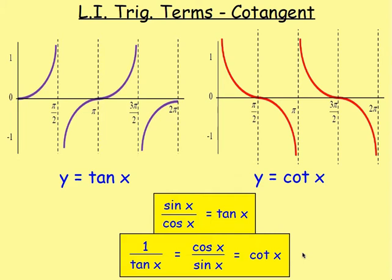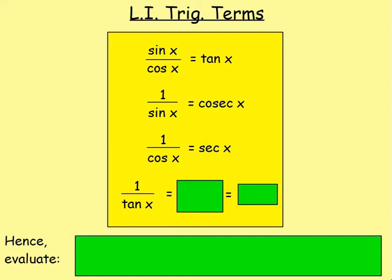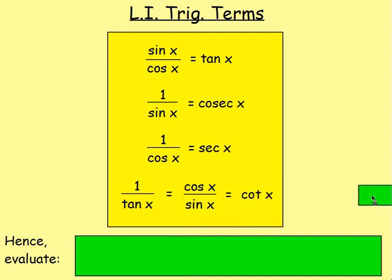So we've just been introduced to sec x, cosec x, and cot x. A quick recap: from years ago, we know that sin over cos is equal to tan. We also know that 1 over sin x is called cosec x. We know 1 over cos x is sec x. And 1 over tan x — since tan is really sin over cos — 1 over tan would be cos over sin, and we call that cot x.